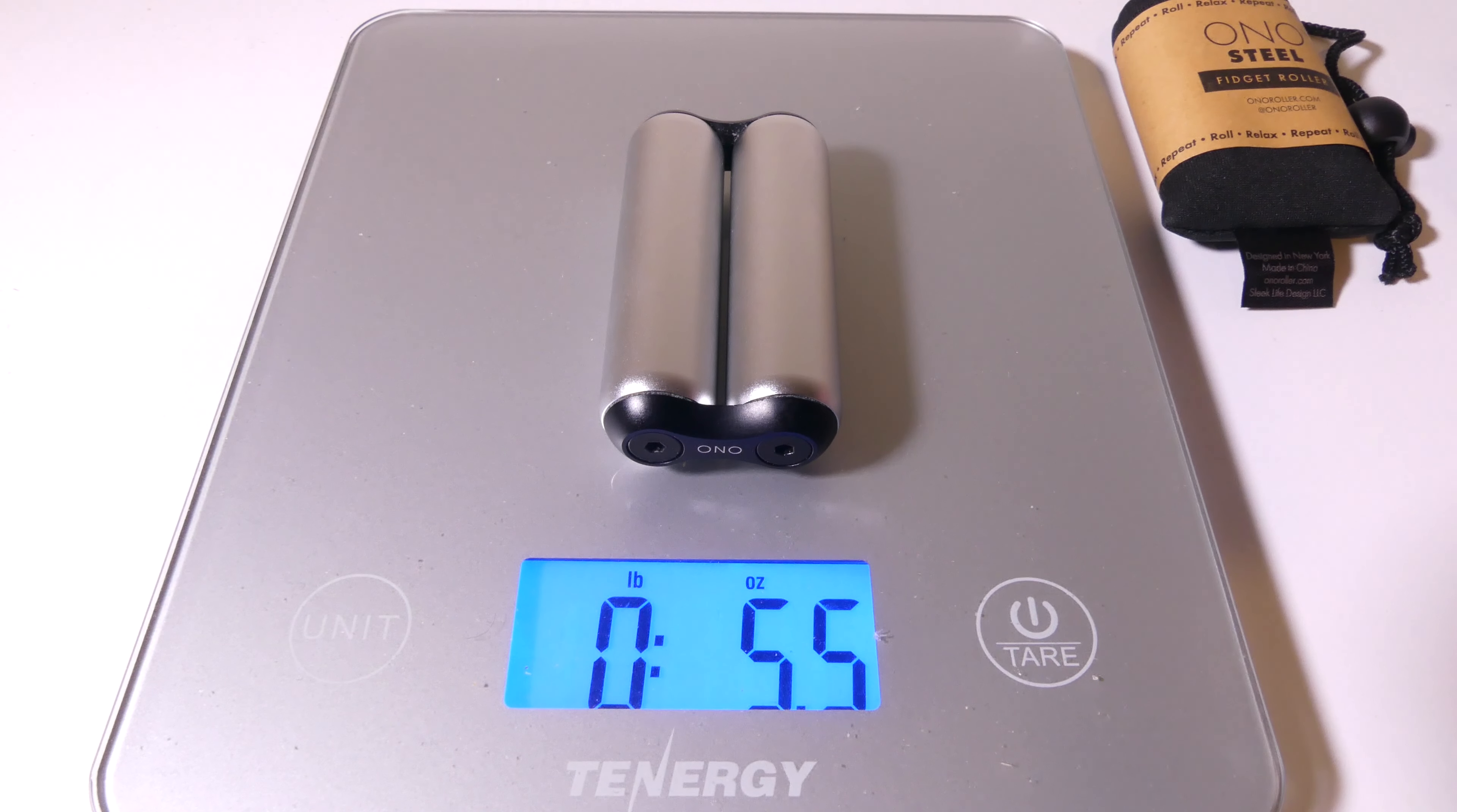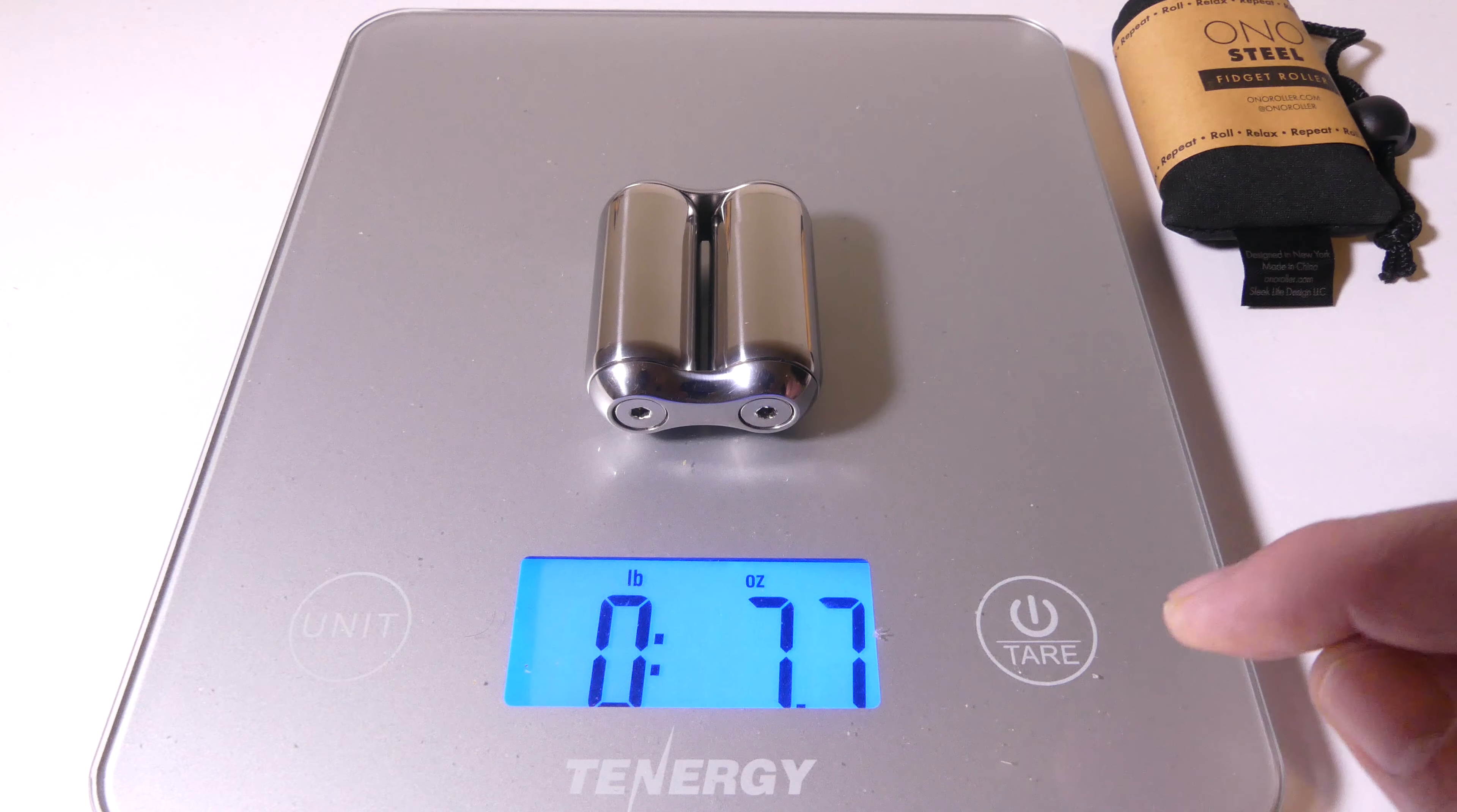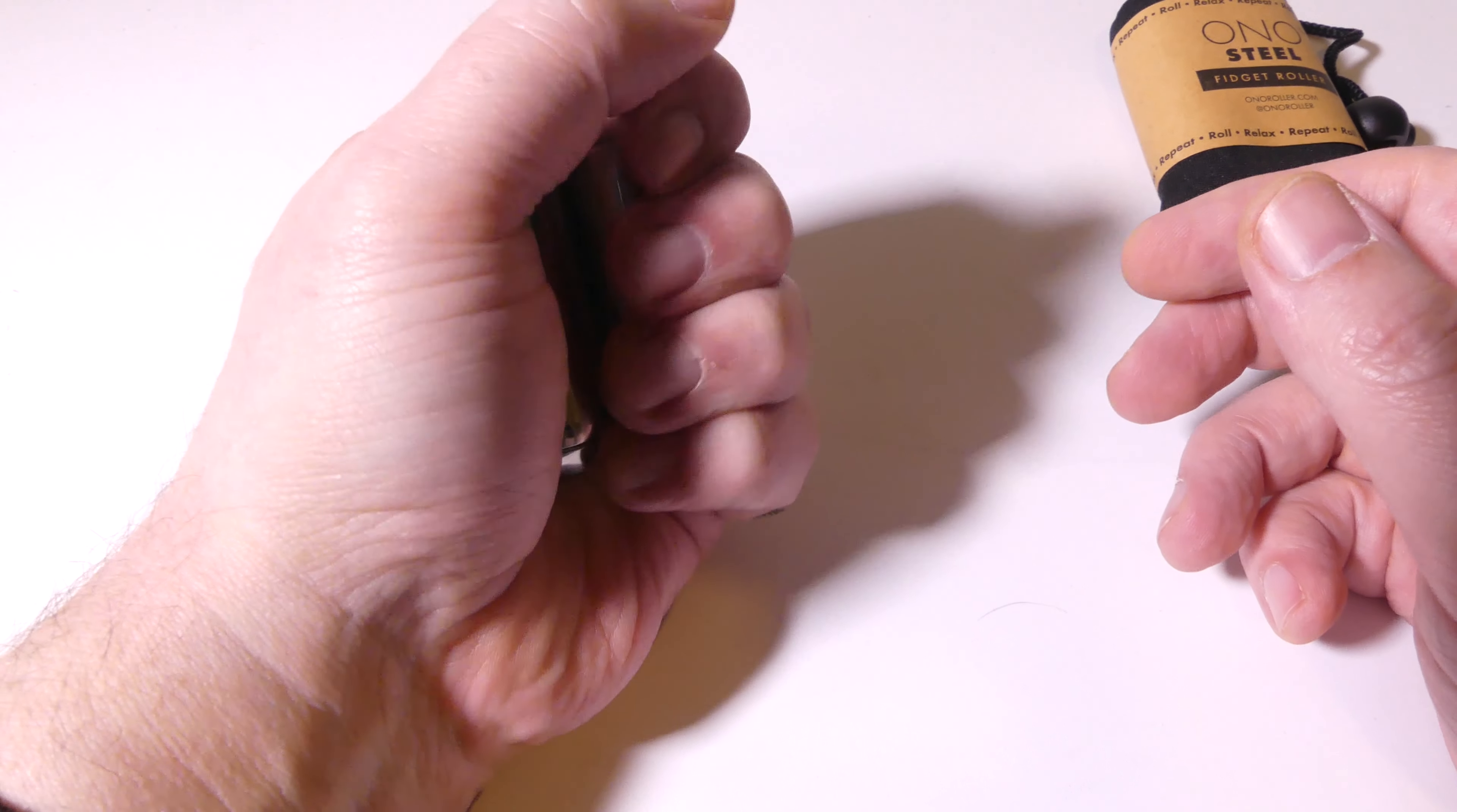Now, this is the mini at 2.2 inches, weighs 7.7 ounces. The original weighs 5.5, and it's larger, but it weighs less because it's made out of aluminum. So, 7.7-ish ounces on the steel mini. So, that gives you a good idea of what the weight is like on this.